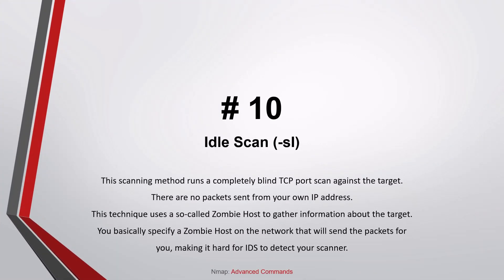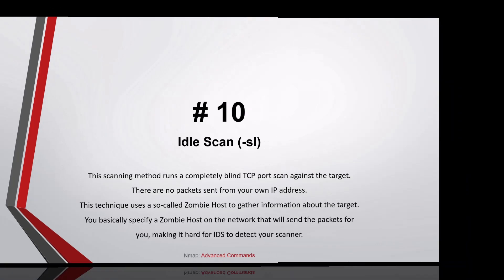Number ten: Idle scan. This scanning method runs a completely blind TCP port scan against the target with no packets sent from your own IP address. It uses a so-called zombie host to gather information about the target. You specify a zombie host on the network that sends packets for you, making it hard for IDS to detect your scanner. To find a good zombie host, you must perform a port scan and OS detection so Nmap can find the IP ID.